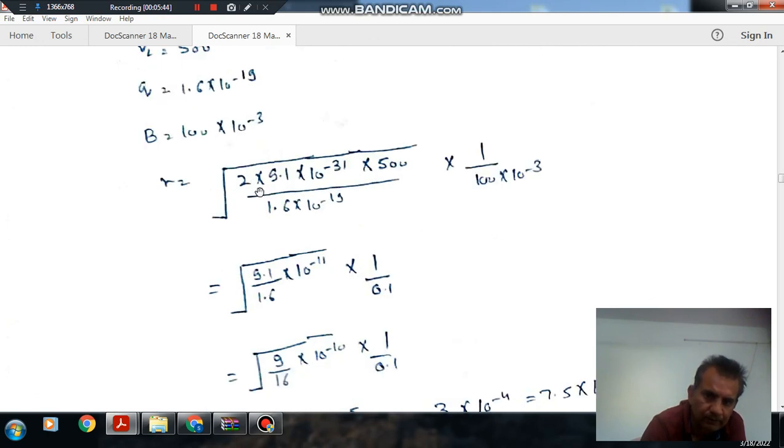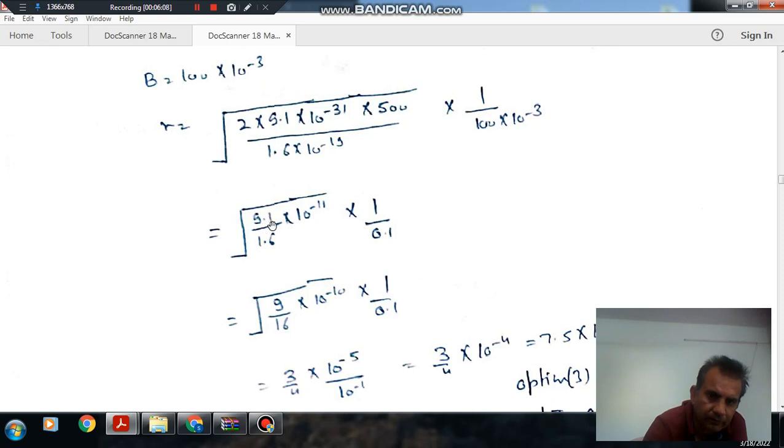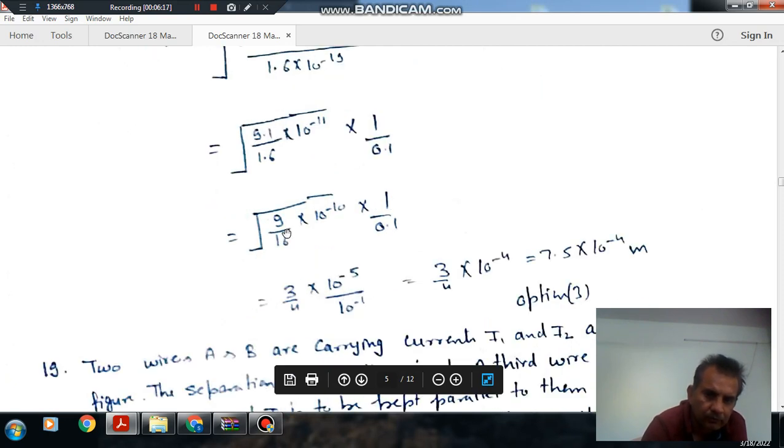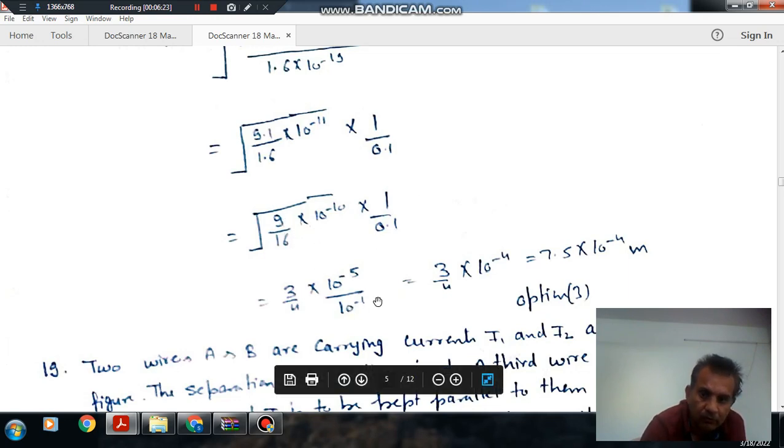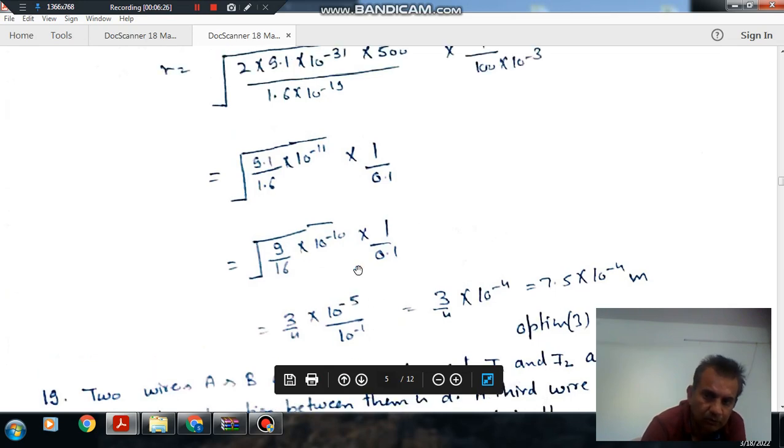You can easily make the calculation because 500 times 2 will give you 1000. This is 10^-19, 10^-31, and this is again 10^-1. So -13 plus -22 will become -11, giving 9.1×1.6 times 10^-10. This works out to 3/4 times 10^-4 meters.